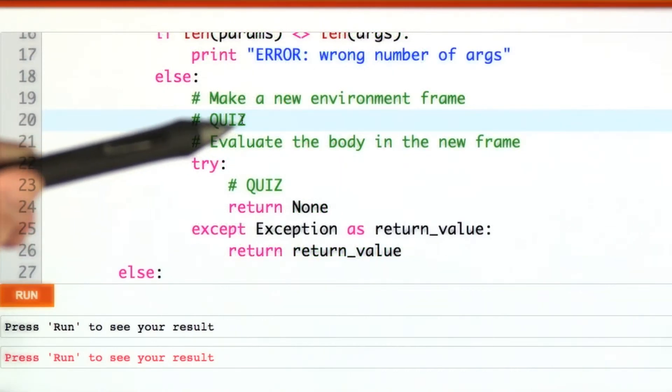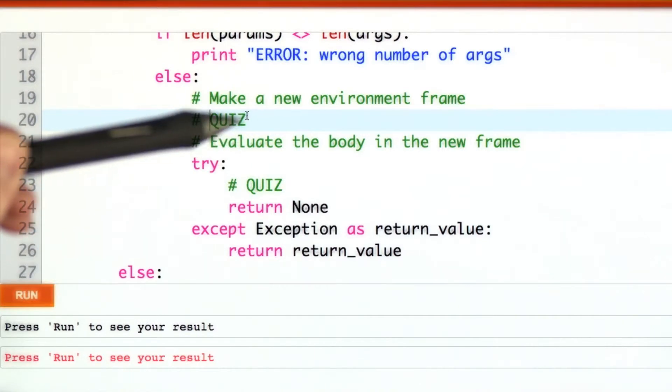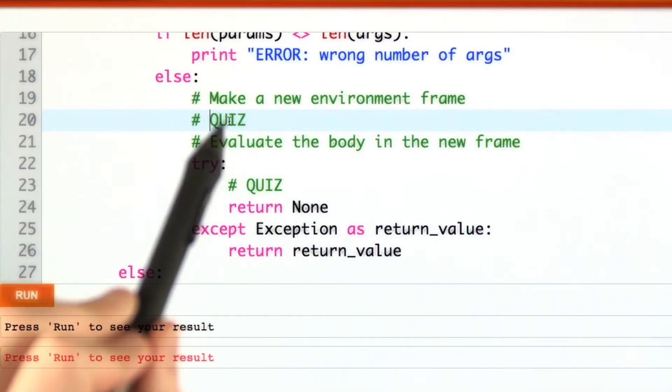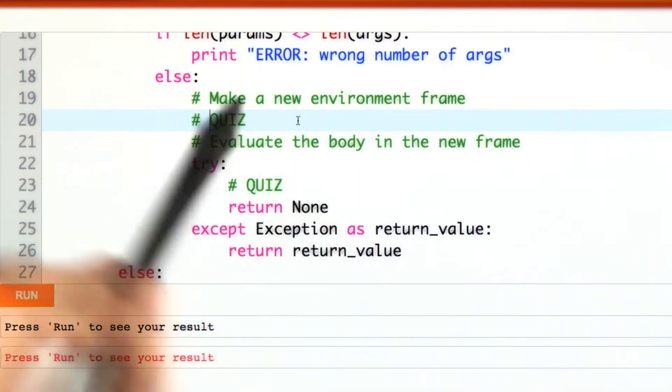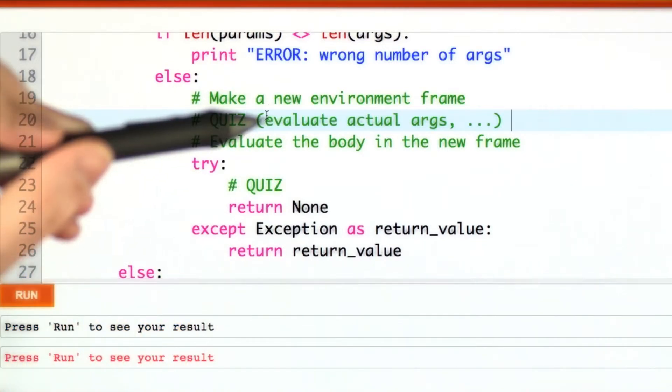We'll have to make a new environment frame and follow all of those steps, make potentially spaces in the new frame for the formal parameters, and assign to them the values of the actual arguments. So there'll be quite a bit to do in here.